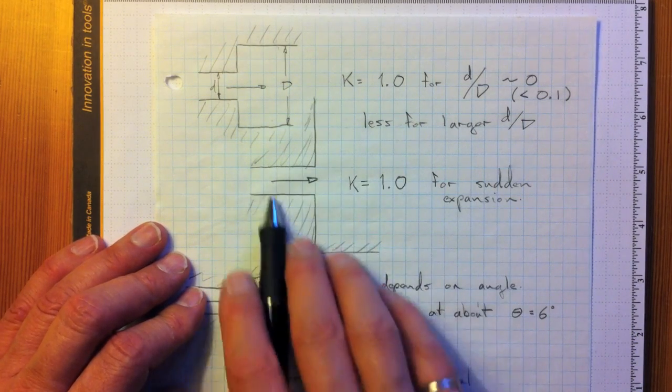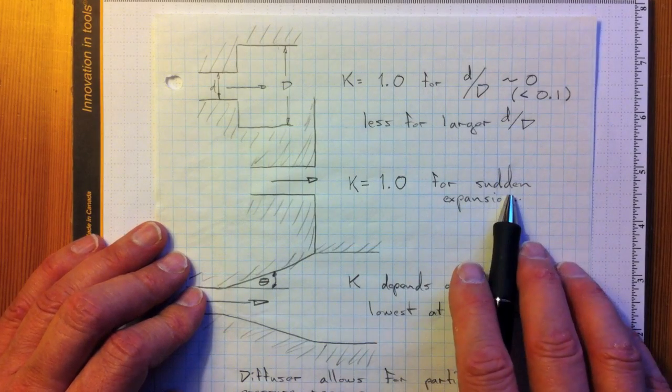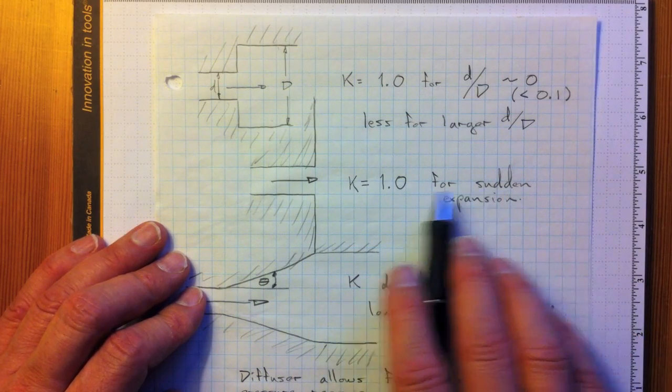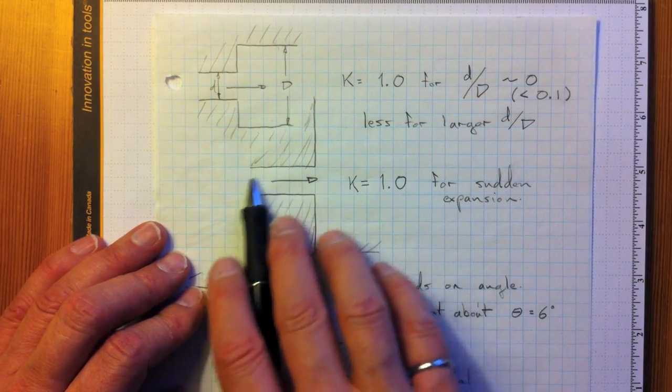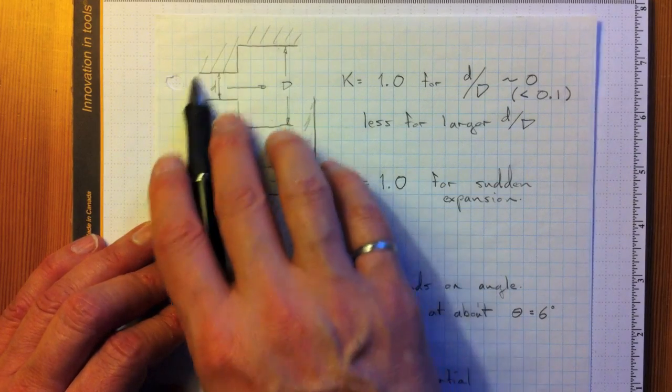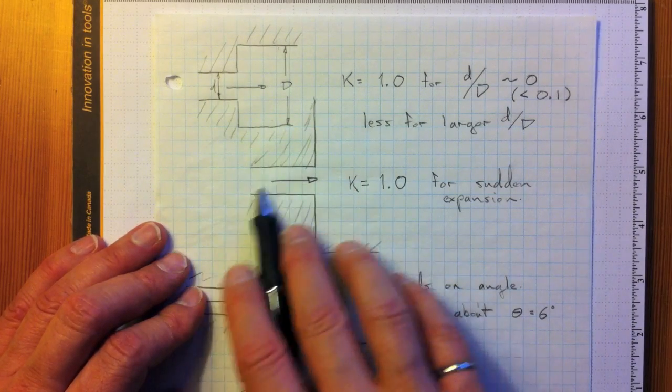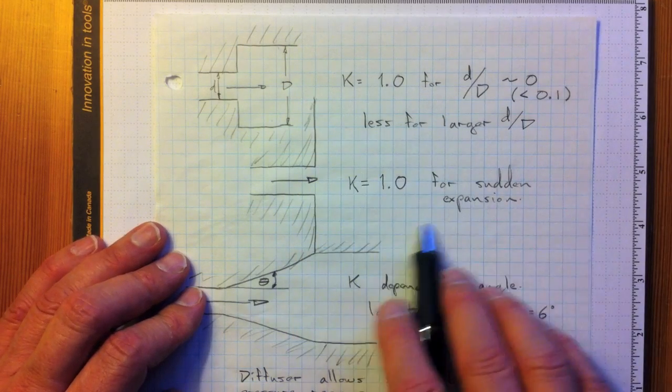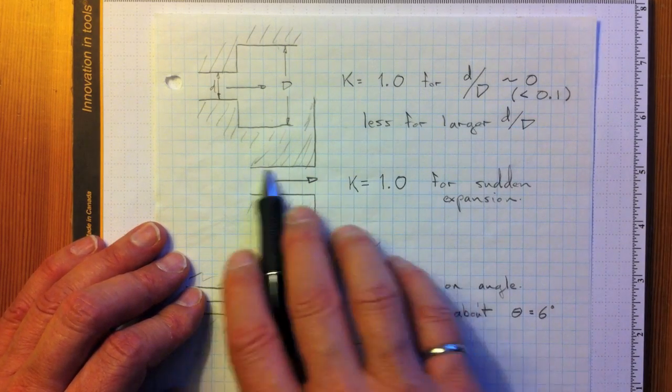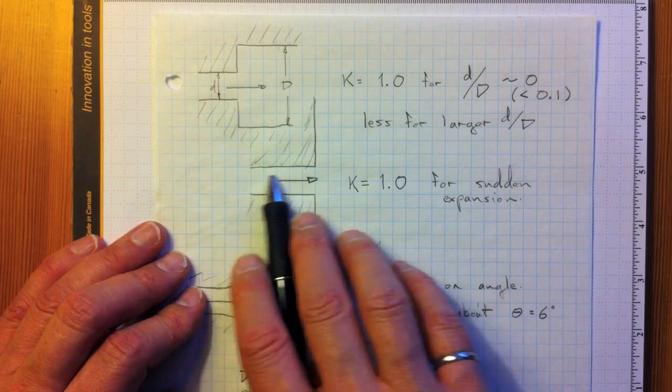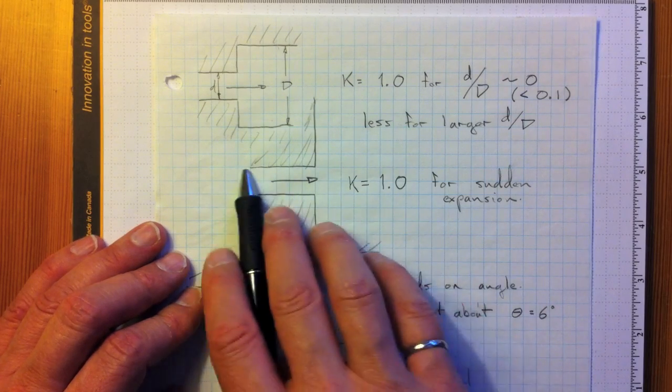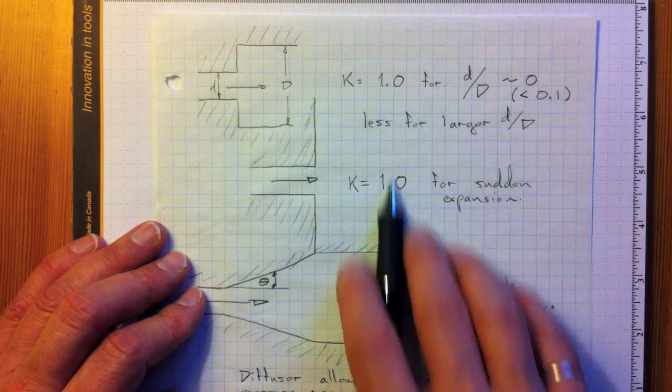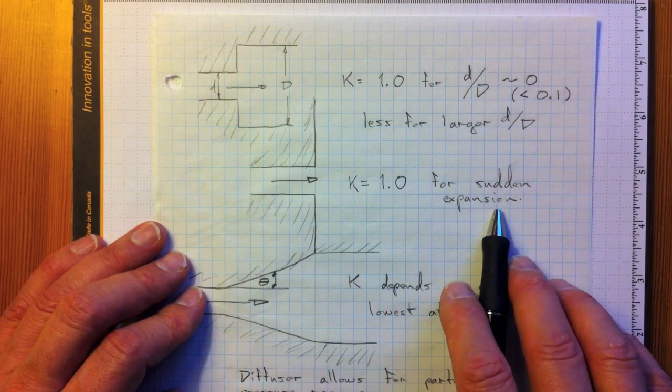And k is equal to 1 for sudden expansions. If we go out into an infinite reservoir, k is equal to 1. Now this makes sense because all of the kinetic energy that we have here, when we go out into that expansion, it's all just dissipated into turbulence. So this k value of 1 is for sure. Regardless of the geometry of this exit, we have a jet coming out here and it dissipates all that kinetic energy.